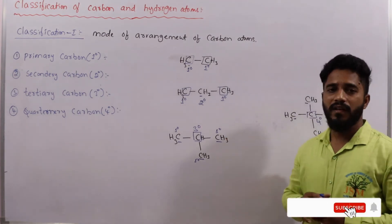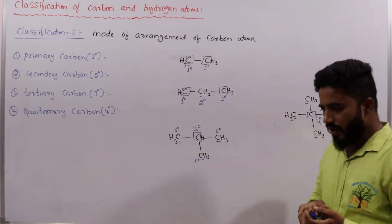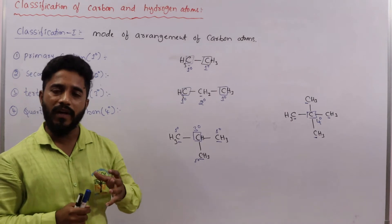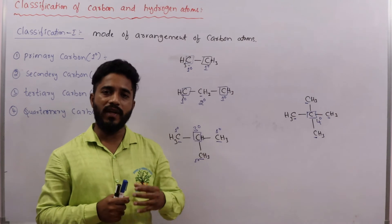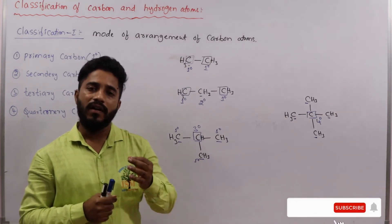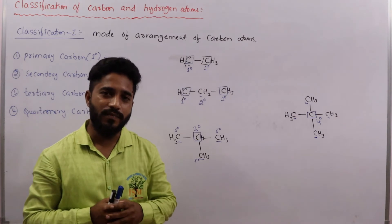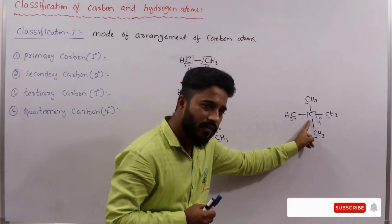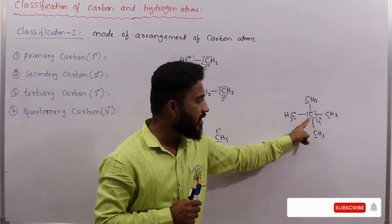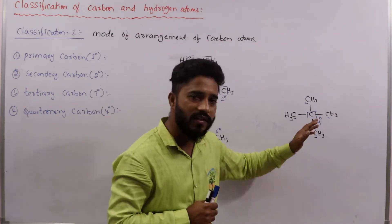Now let us see what types of hydrogens are present in these molecules. If a hydrogen atom is bonded to a primary carbon, it is said to be primary hydrogen. If bonded to a secondary carbon, it is secondary hydrogen. If bonded to a tertiary carbon, it is tertiary hydrogen. Quaternary hydrogen is not possible, because the quaternary carbon already has four carbon bonds — adding hydrogen would exceed carbon's valency of four.